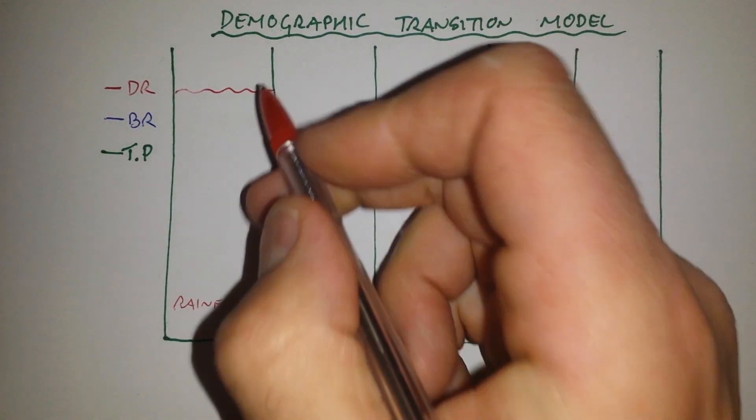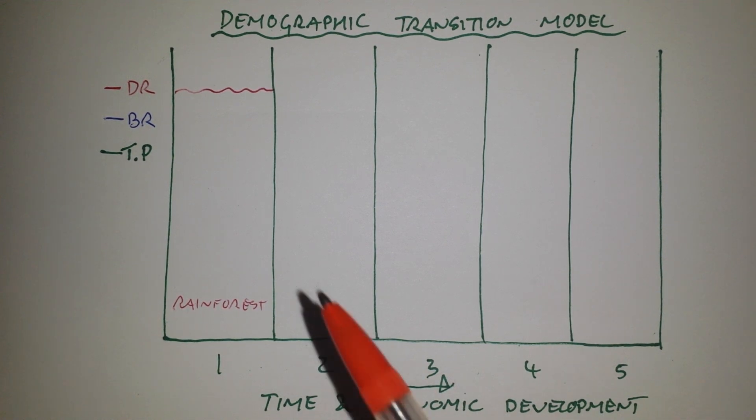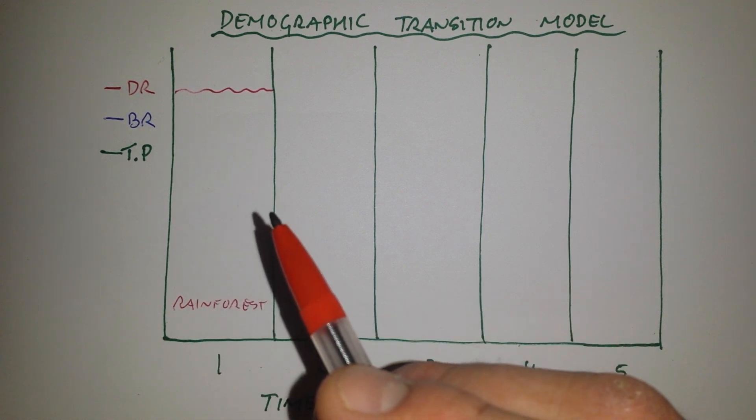The idea here is that the death rate is really high. It's high because of lack of access to medicine, to vaccinations. So if someone catches a cold or drinks dirty water, gets cholera, they're going to die. There's no treatment for them. So you've got a low life expectancy, high death rate, high infant mortality rate.